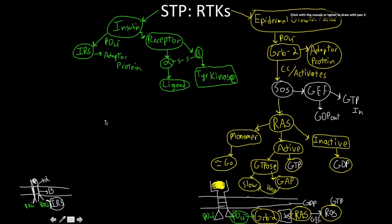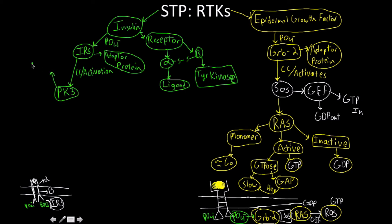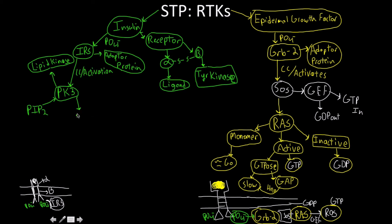Once IRS is phosphorylated many times over, it activates something known as PI3K — phosphoinositol-3-kinase. PI3K is a lipid kinase, which highlights the remarkable range of kinase function across proteins, ATP/ADP, and lipids. PI3K takes PIP2 and adds a phosphate group to it, converting PIP2 into PIP3.